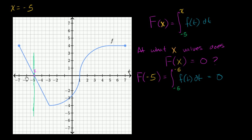But let's see if we can find more. As x gets larger and larger, when x is equal to negative 3, this area right over here — we're going from negative 5 to negative 3, a distance of 2, and the height right over here is 4. So this area is 2 times 4 times one half, which is going to be 4. And since it's above the function and below the t-axis, we'll write that as negative 4.